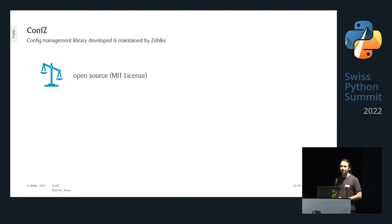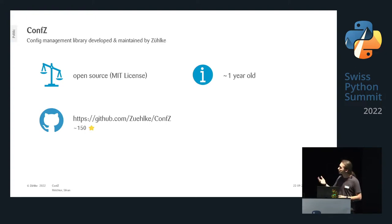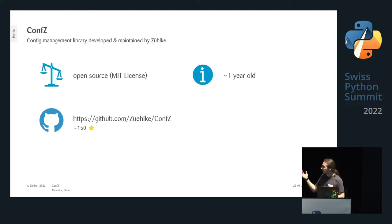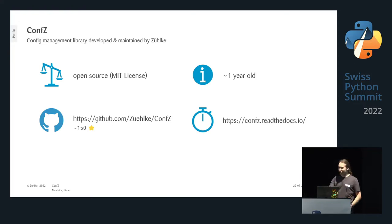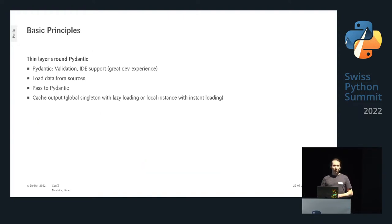That's what we did: we wrote ConfSet. ConfSet is a configuration management library we developed at Zylke. It's open source under the MIT license, developed about a year ago and continuously improved. It's on GitHub — the world hasn't waited for it, but it's not completely unpopular either. It has documentation on ReadTheDocs and you can install it with pip or conda.